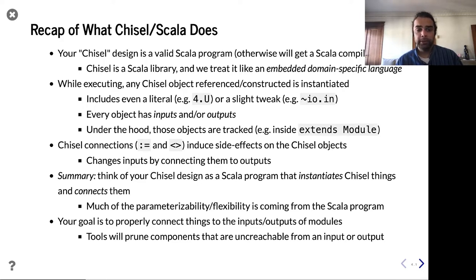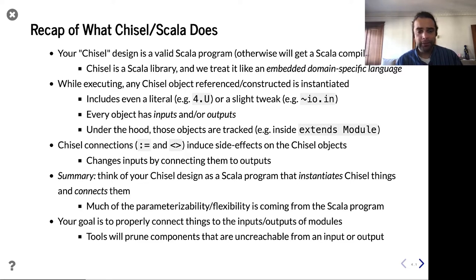When we write one of these Scala programs that is technically Chisel, we're using the Chisel library and we're designing hardware. While designing hardware, we're doing two things: instantiating pieces of hardware and connecting them together. All the Scala code is really deciding which hardware blocks to instantiate and how to connect them — that's the flexibility and niceness that gives us parameterization for generators.